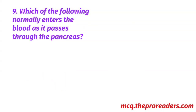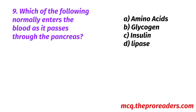Which of the following normally enters the blood as it passes through the pancreas? A. Amino acids. B. Glycogen. C. Insulin. D. Lipase. Option C, Insulin, is the correct answer.